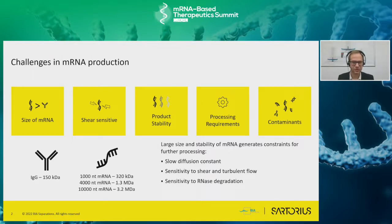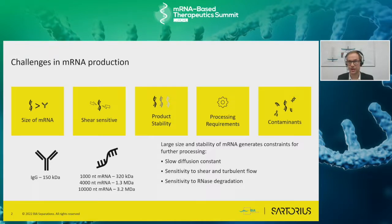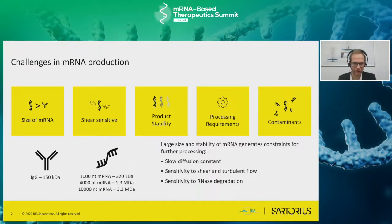Let's consider the challenges from the point of view of mRNA drug substance. I'll be speaking exclusively about mRNA drug substance today. One consideration we often overlook is just how large mRNA is as a molecule. If we consider IgGs as large, currently circulating COVID vaccines are approximately 10 times the size - 1.3 megadalton for a 4,000 nucleotide mRNA. And for self-amplifying mRNA, that goes well over 3 megadalton.